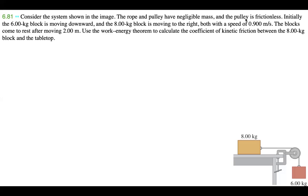Back to the question. Here I have with me problem 6.81 from Ninging Friedman's University Physics textbook. Consider the system shown in the image. The rope and pulley have negligible mass and the pulley is frictionless. Initially the 6.00 kilogram block is moving downward and the 8.00 kilogram block is moving to the right, both with a speed of 0.900 meters per second. The blocks come to rest after moving 2.00 meters. Use the work-energy theorem to calculate the coefficient of kinetic friction between the 8.00 kilogram block and the tabletop.